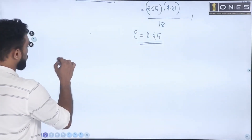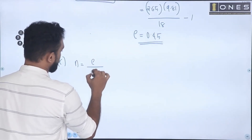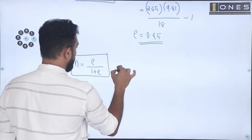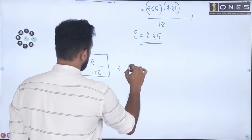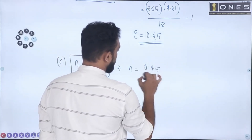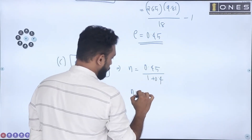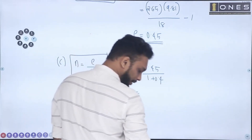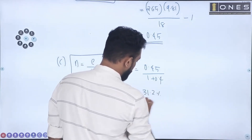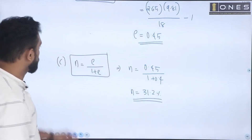What does e mean? Now for porosity: n equals e divided by (1 plus e). So porosity equals 0.45 divided by (1 plus 0.45). If you calculate this, you will get n equal to 31.2%. Underline that — that is the porosity.